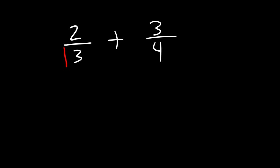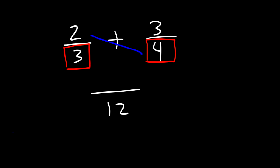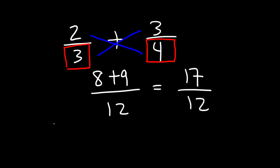The first thing you could do is multiply the denominators of the fractions. Then multiply 3 times 3 and that will give you 9. And then you could add 8 and 9 — 8 plus 9 is 17. So we get the answer 17 over 12, and this is our answer as an improper fraction.